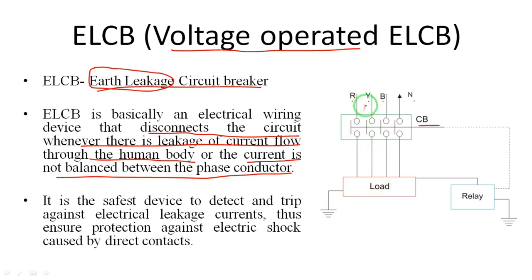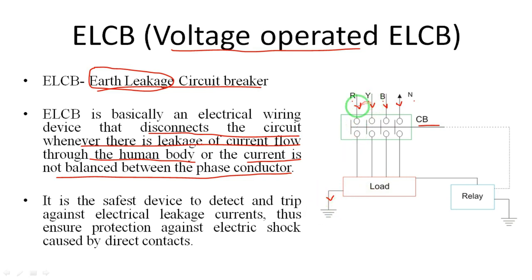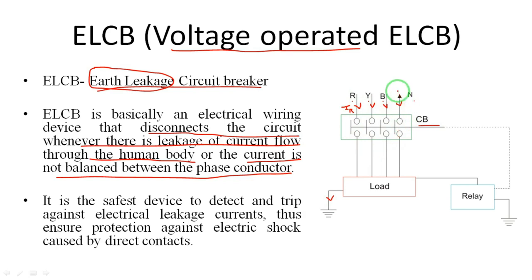Under normal conditions, the currents IR, IY, and IB are circulating in the three phases along with neutral current IN. If there are no leakage currents, all currents are in a balanced condition — meaning the incoming current equals the outgoing current.